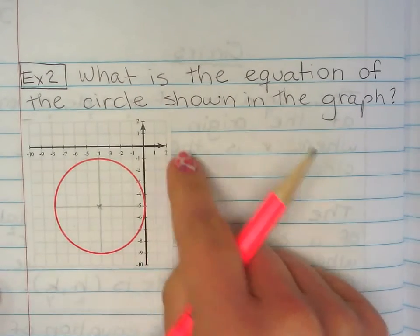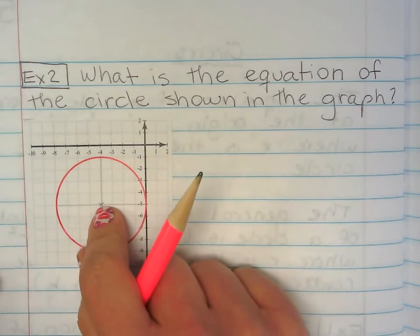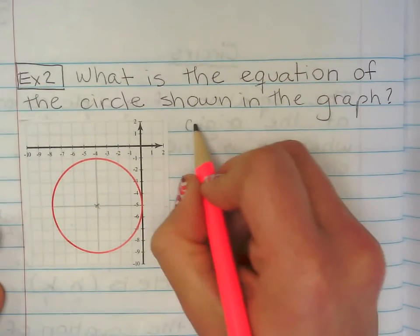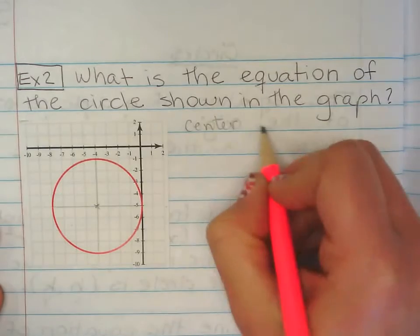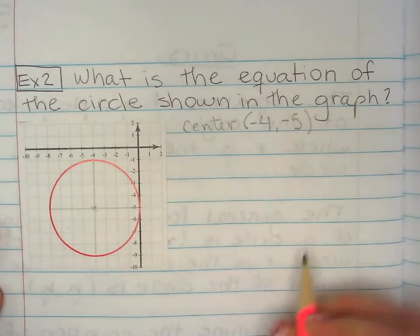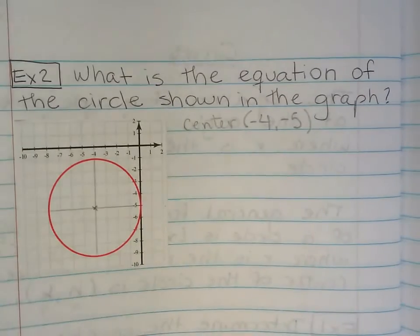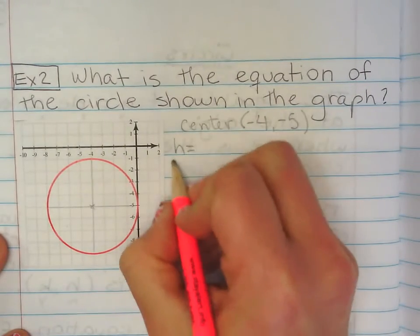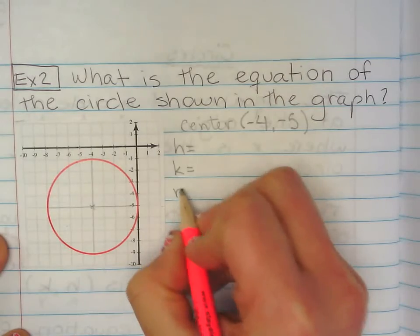So, most of you can just eyeball it and go, oh, right here at (-4, -5). So, center of the circle is right at (-4, -5). So, like we did in the other problem, we need to find h, k, and r.